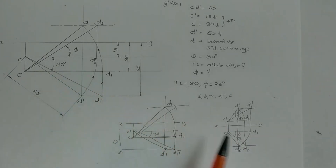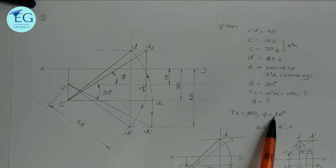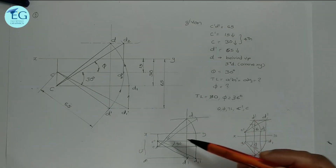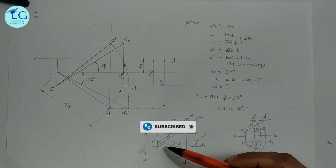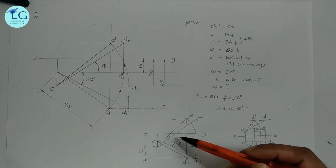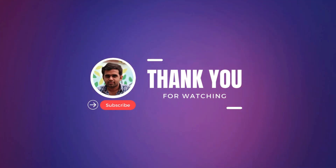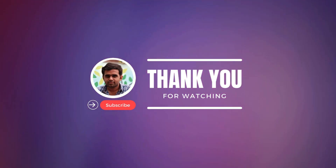Now let's get the final answer. Using the rotation method, this figure gives us a very clear comparison. The answer is: true length is equal to 80 mm, and phi is equal to 36 degrees — so we can get full marks. C dash D dash located gives 3 to 4 marks; C dash D dash equal to 8 marks for the full construction. Using fine lines for the rest completes the solution.